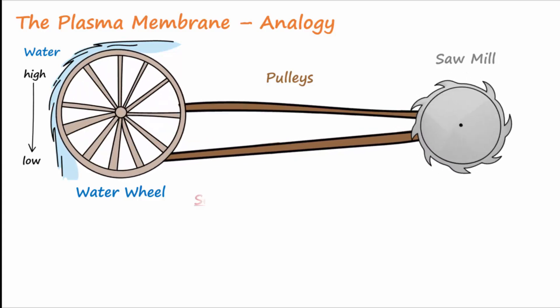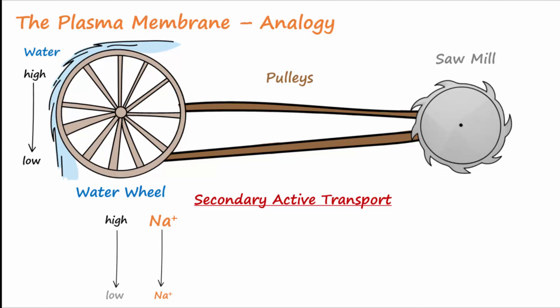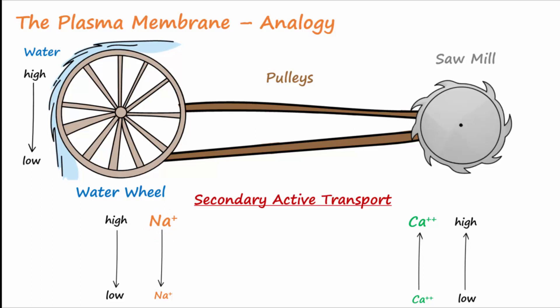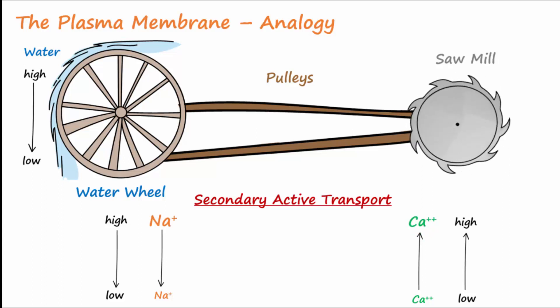This can be compared to secondary active transport. Secondary active transport uses sodium going down its gradient — from high to low — and entering the cell to move, for example, calcium out of the cell. Calcium is moved against its gradient, or low to high, since calcium is higher outside the cell. The sodium going from high to low is like the water going from high to low downhill. The sodium essentially provides the power, and calcium going against its gradient is like the saw turning.